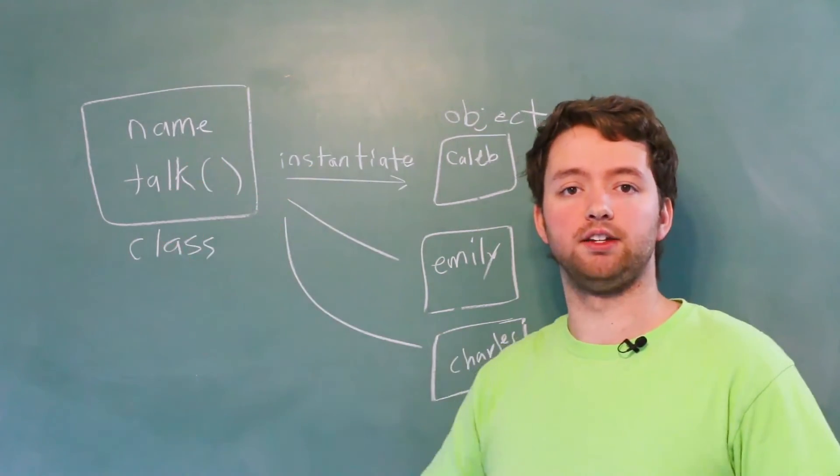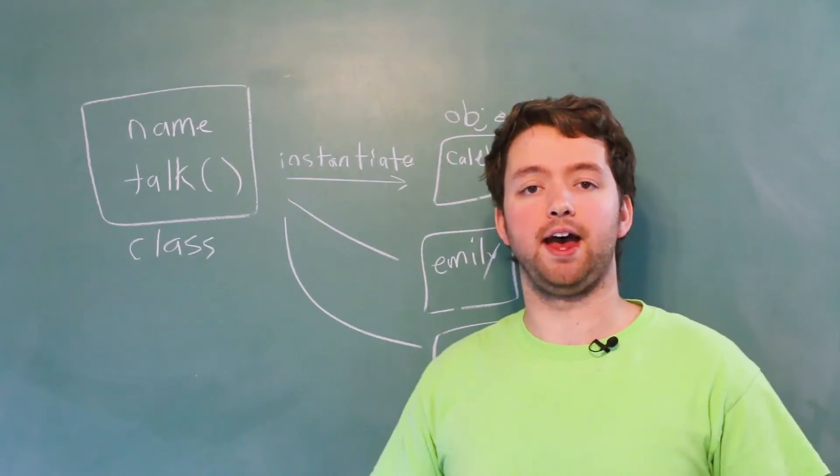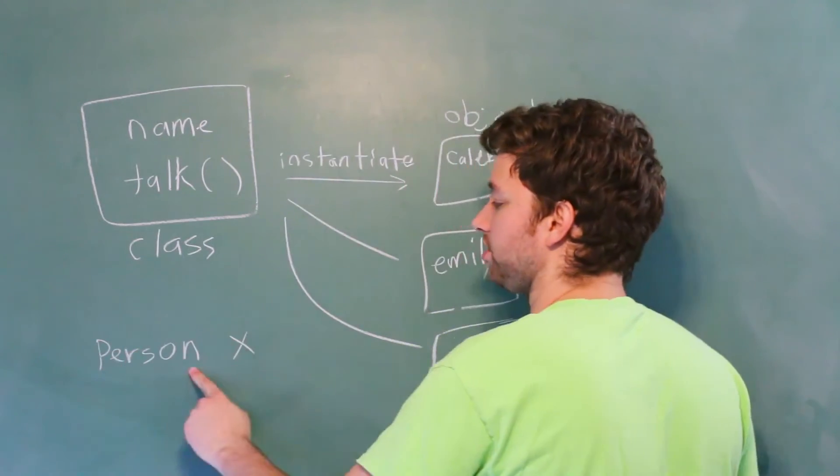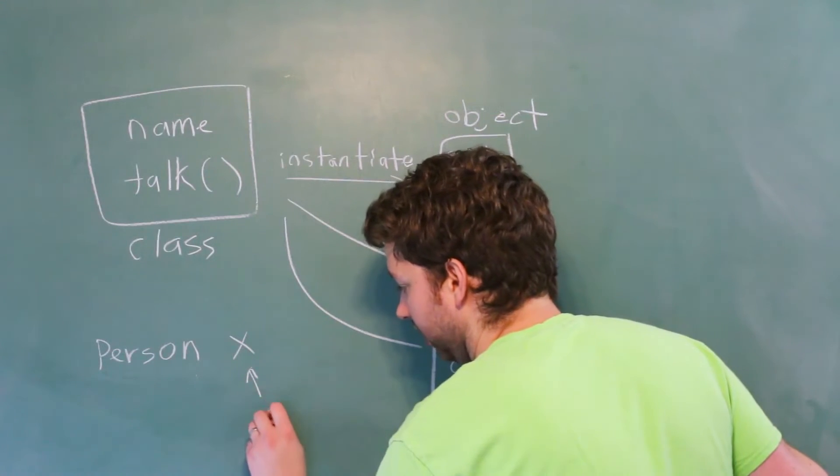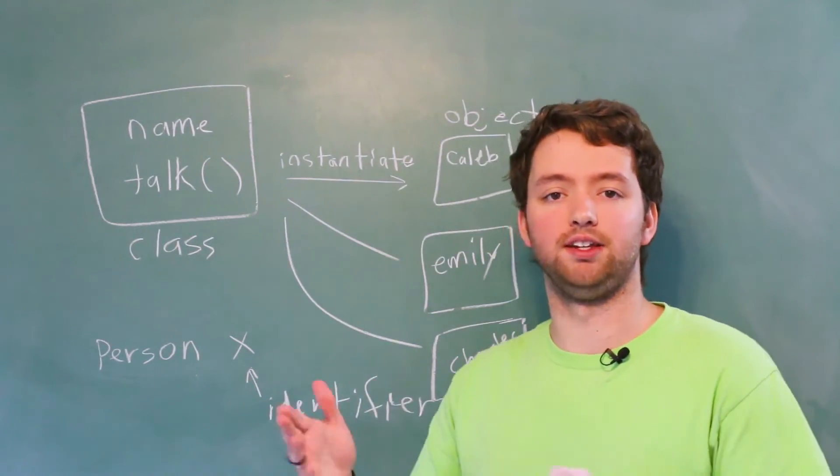The class is going to be defined inside of a file. The objects are going to be created as variables. So we might do something like this. We might say person X. We're basically creating a variable with the identifier or the name. This is the name. It's how we reference it. So this is the equivalent of saying int X.